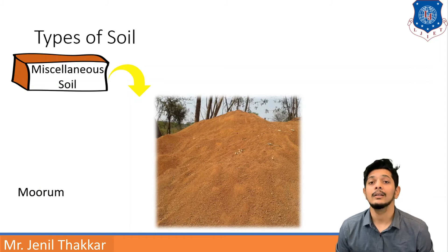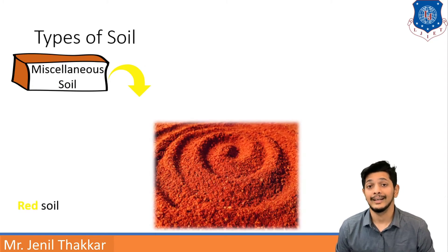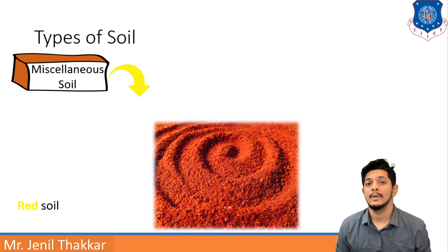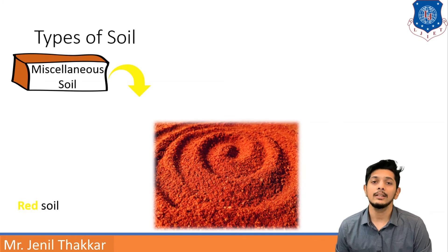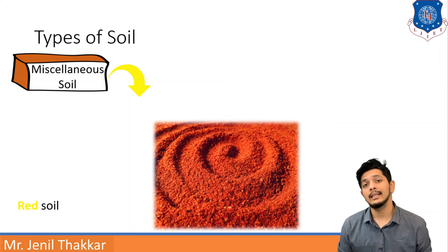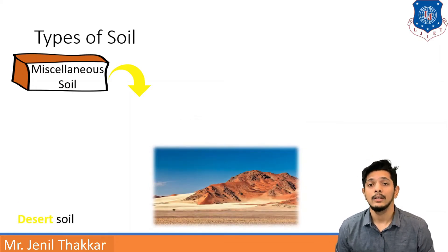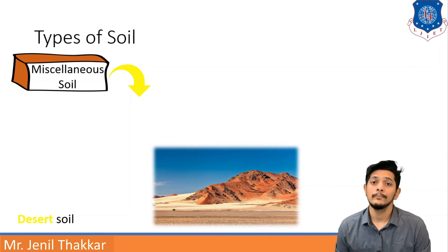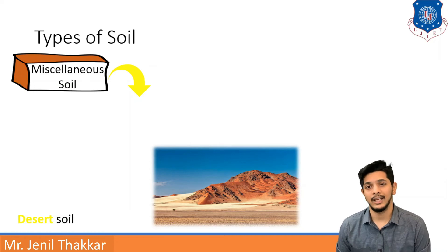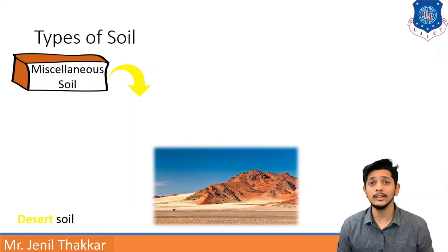It looks like red soil in the picture — according to its name it has a red texture, which is why it is known as red soil. Similarly, desert soil is found in deserts and is called desert soil due to its texture and appearance.